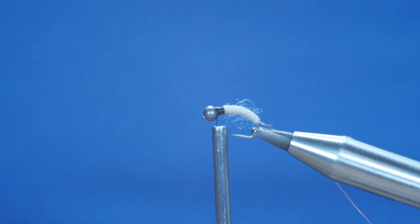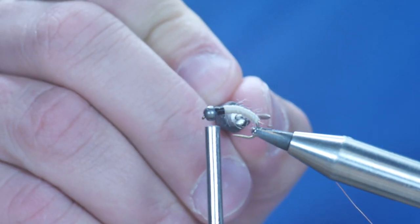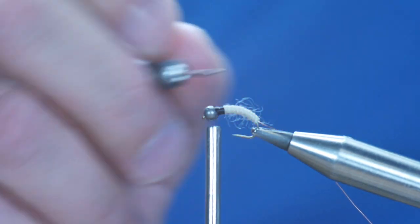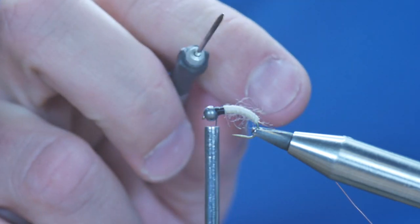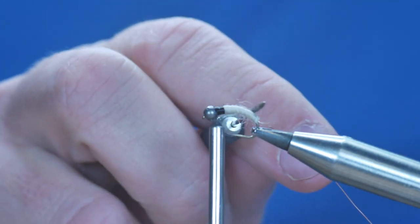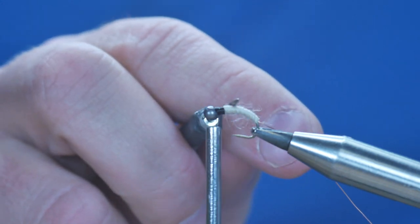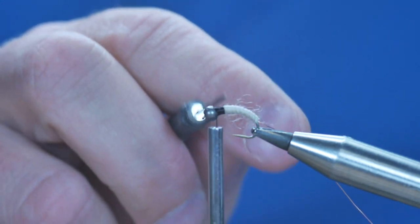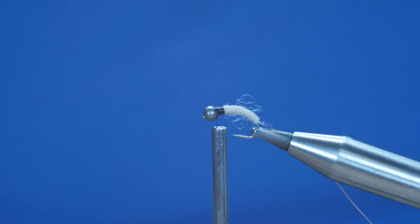Now the reason I've not started with the black thread on the body is I'm a great believer in once the fly is wet, the fish see a lot more than us. So using the tan thread, I'm maintaining the lightness of my body, but for the thorax I'm going to make that black.